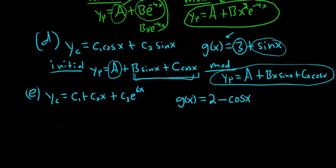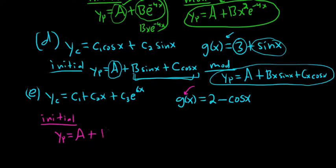As before, we'll do our initial, looking only at g of x. The 2 is going to give us A. And because we have a cosine, that means we need to have a cosine and a sine. There's a minus, but you can just write plus, because constants can be negative. So: B cosine x plus C sine x.